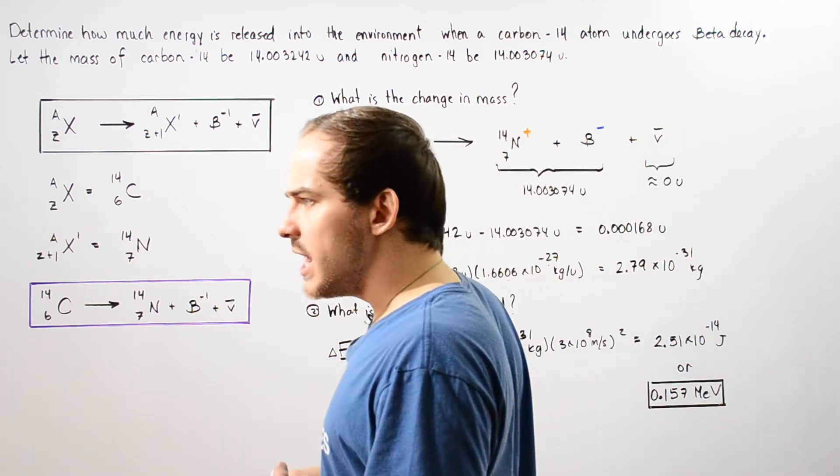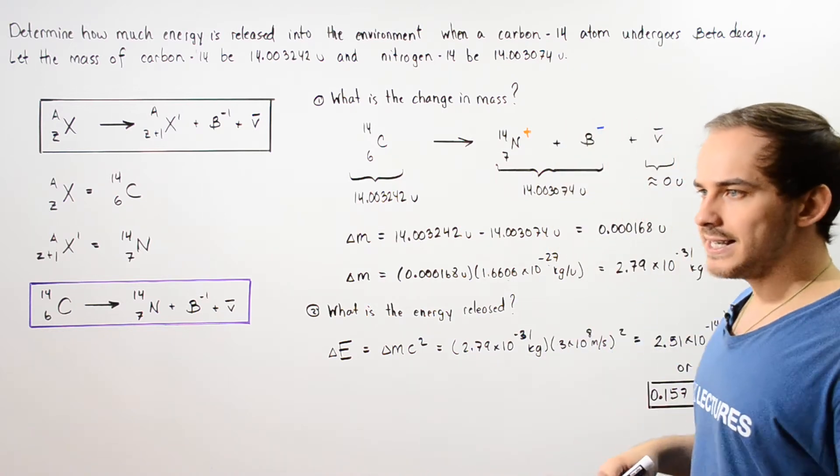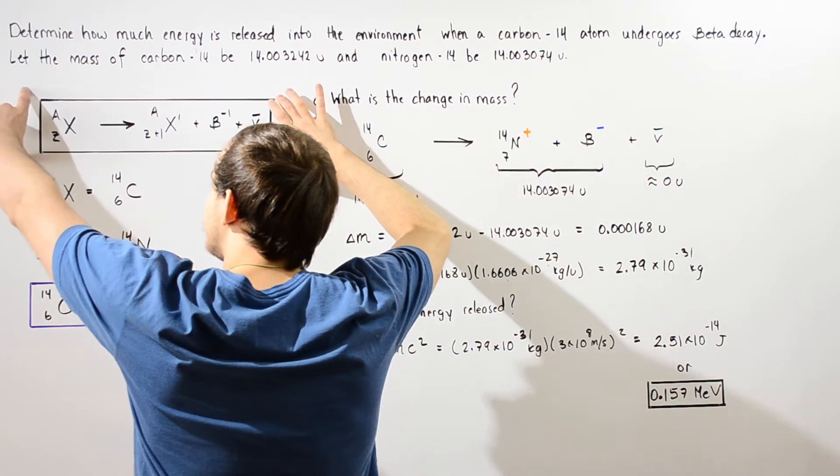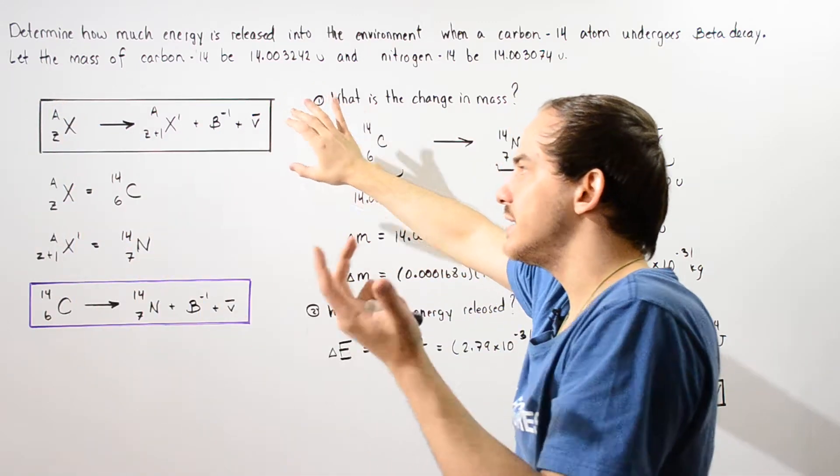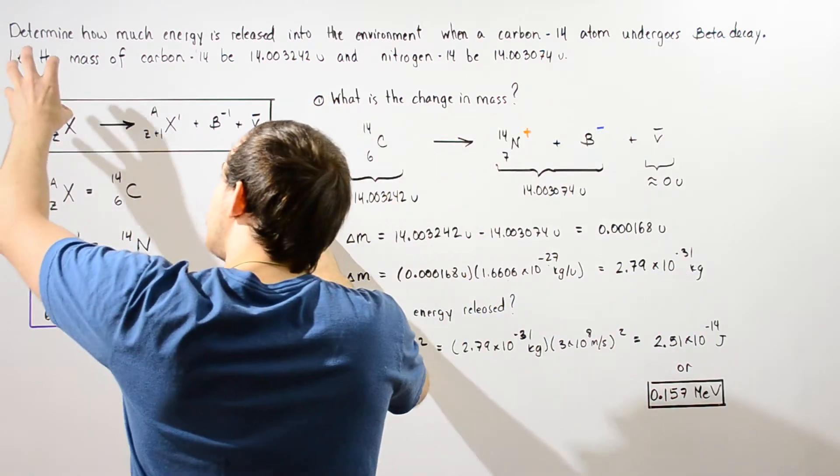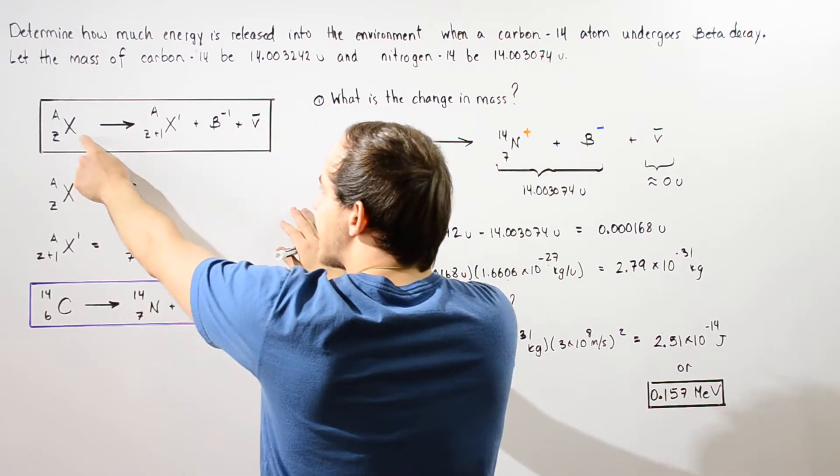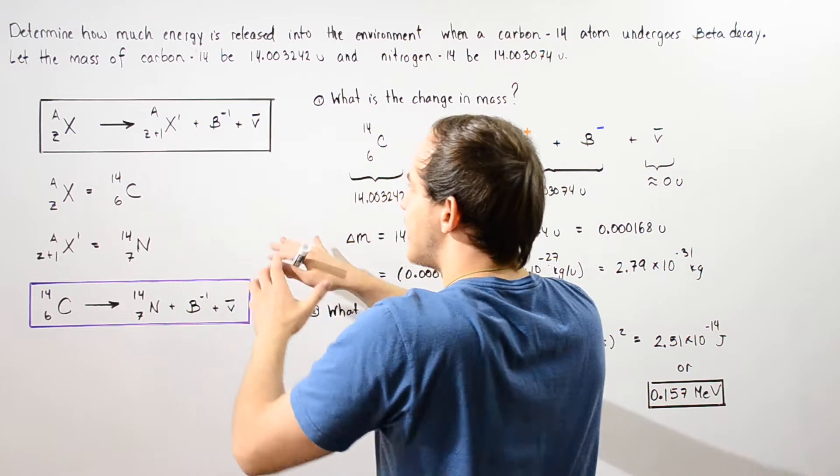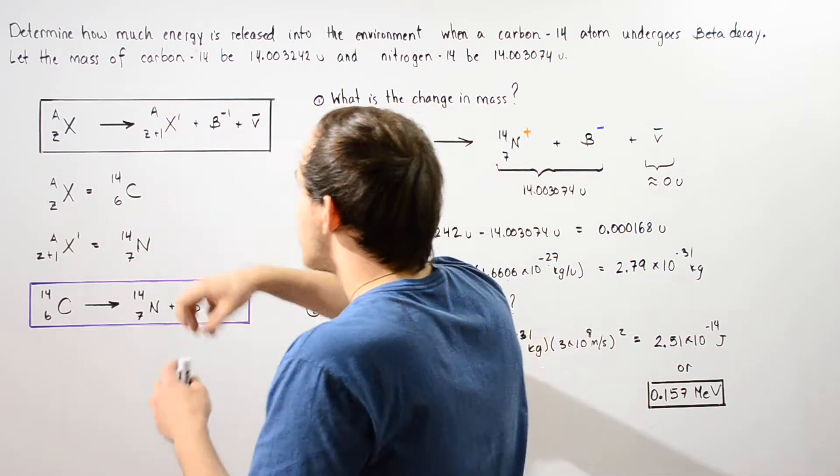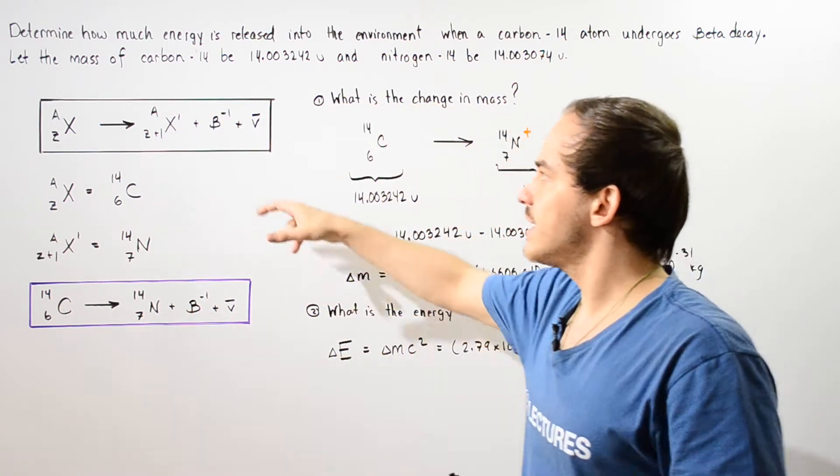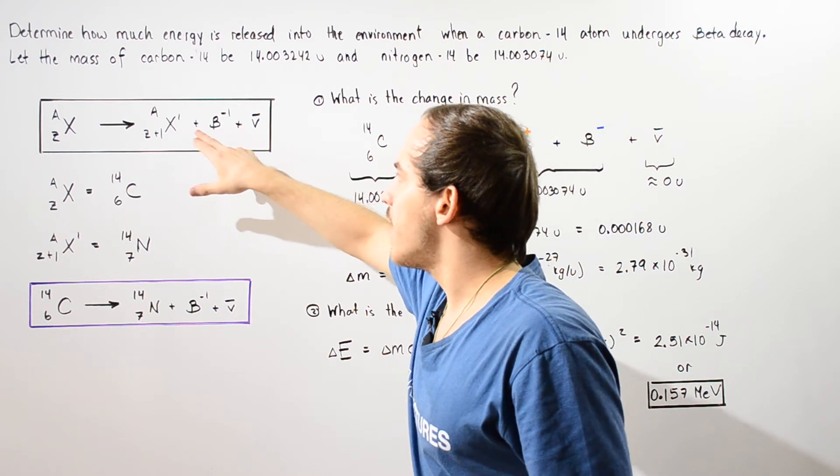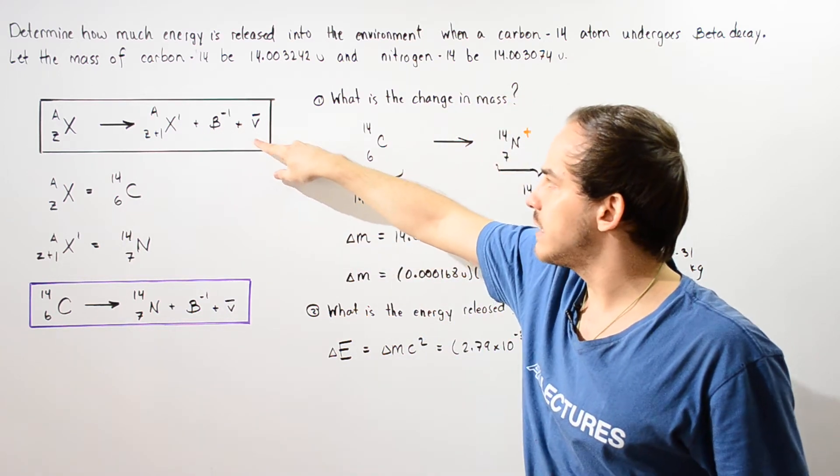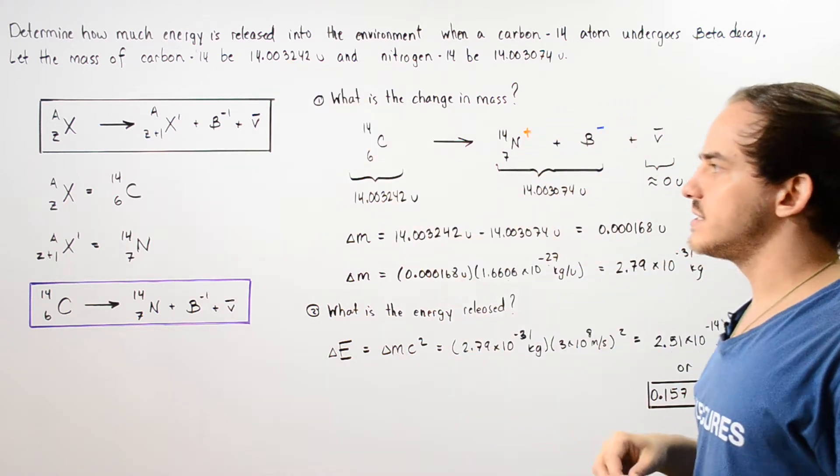So let's begin by writing our beta decay reaction. Basically this is the general formula for any beta decay. We have the parent nucleus designated by X that breaks into our daughter nucleus designated by X prime as well as releasing our electron given by the beta particle plus an anti-neutrino given by V with the bar symbol on top.